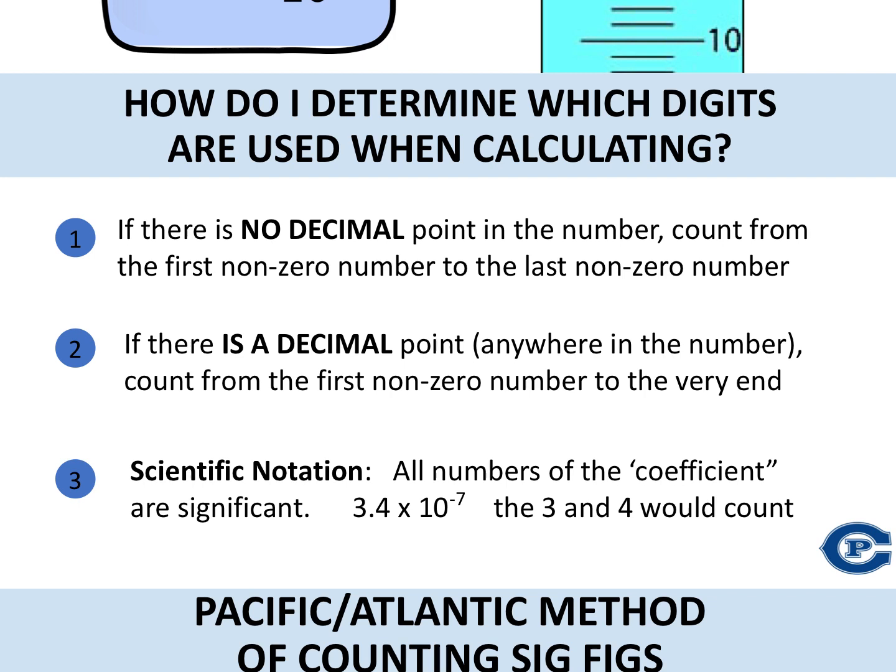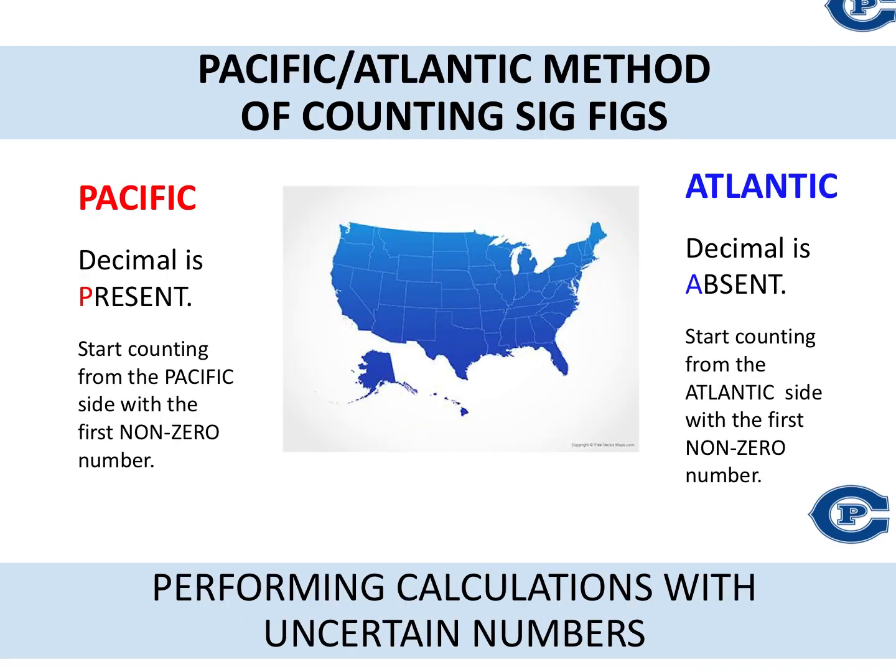Now, looking at the first two, it is a little bit hard to determine where do I start. So there is a method that we use when we're counting sig figs, called the Pacific-Atlantic method of counting our significant figures. When you're looking at the United States on a globe, on the left side you have the Pacific Ocean, whereas on the right side you have the Atlantic Ocean. The Pacific side represents if a decimal is present.